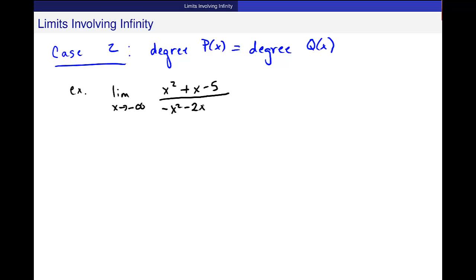The second case, case 2, is when the degree of p(x) equals the degree of q(x). Okay? So let's do an example. The limit as x goes to, let's say, minus infinity of x squared plus x minus 5 over negative x squared minus 2x plus 1.